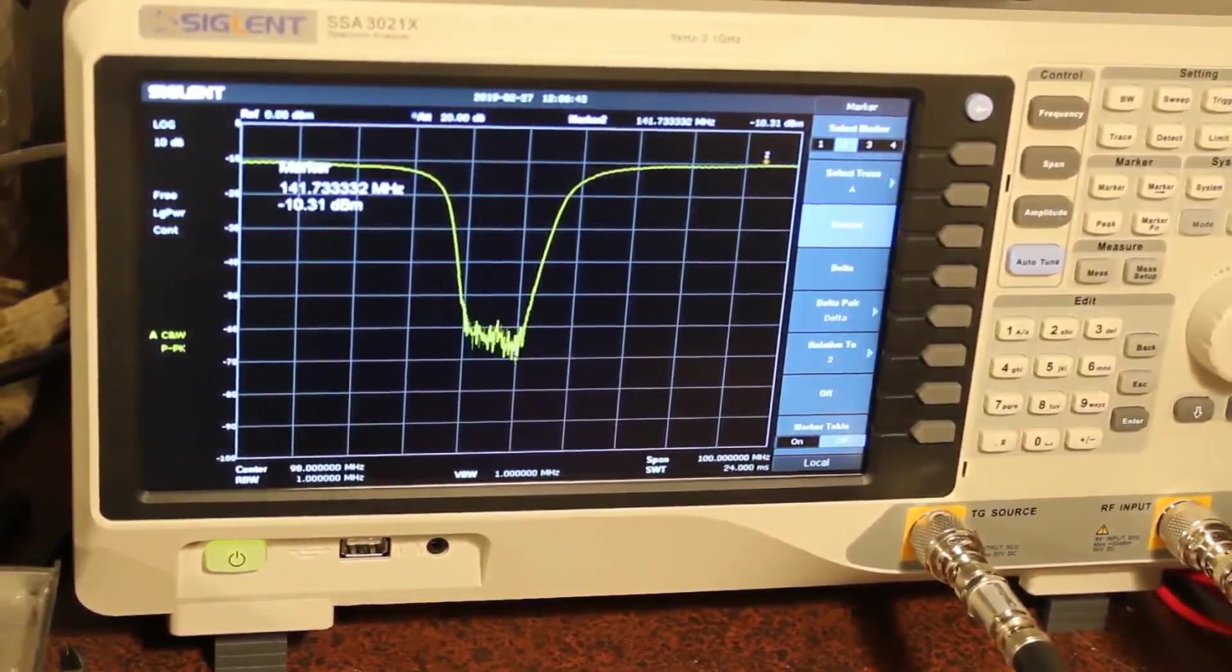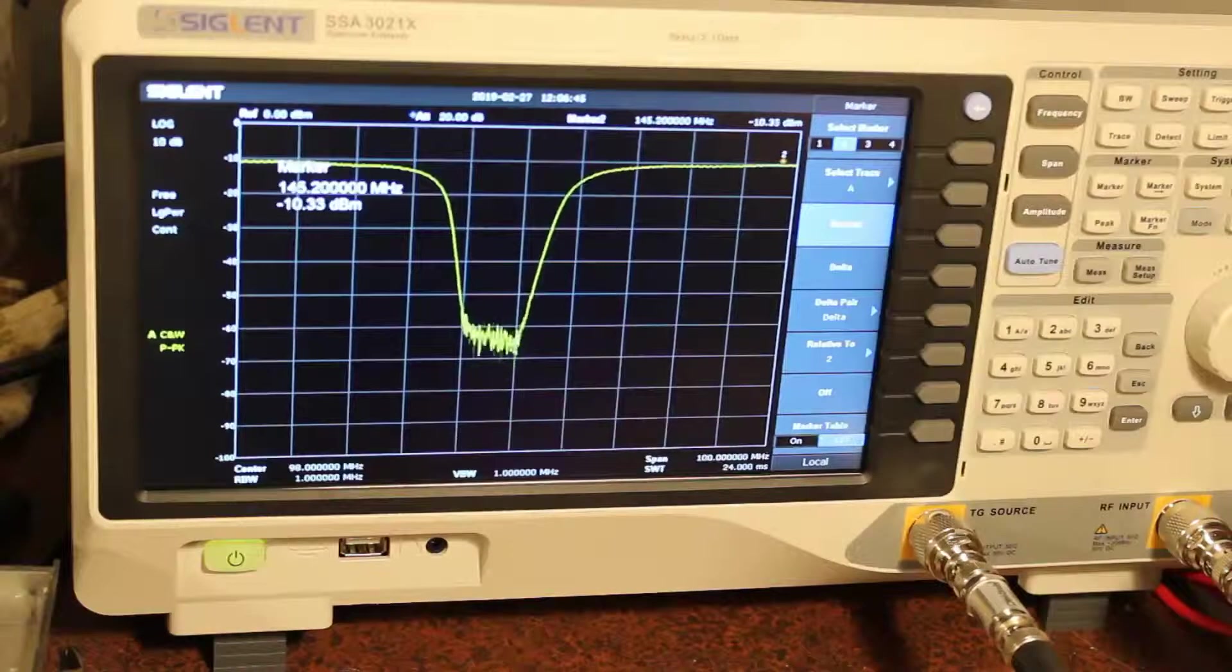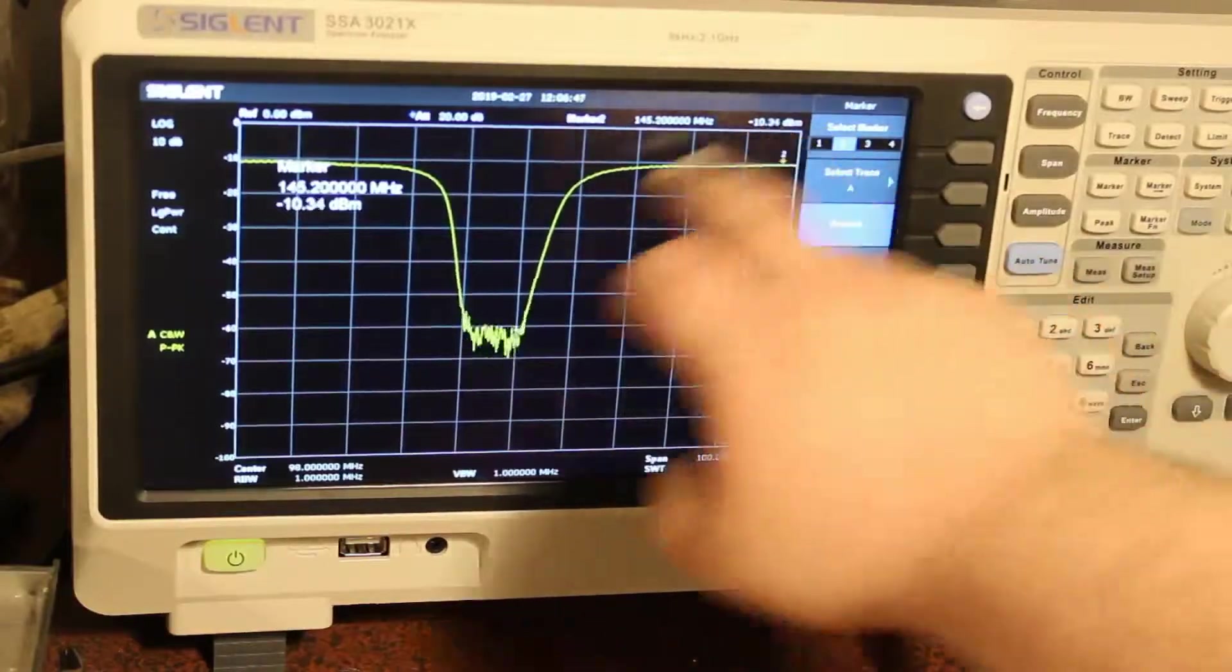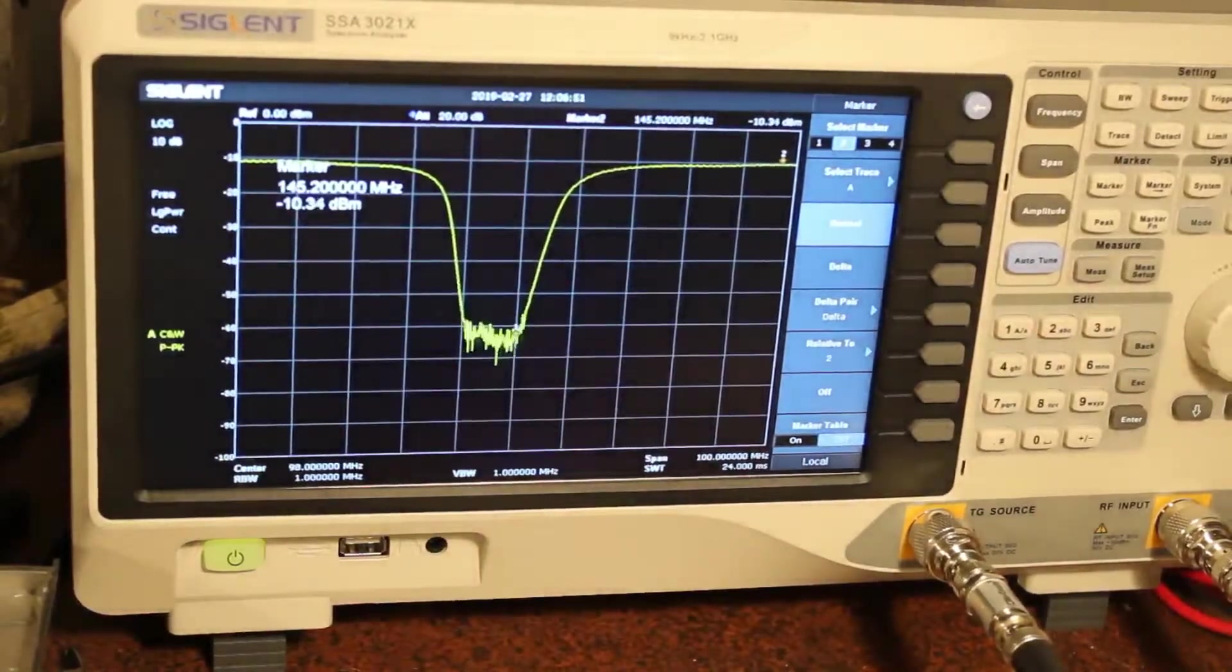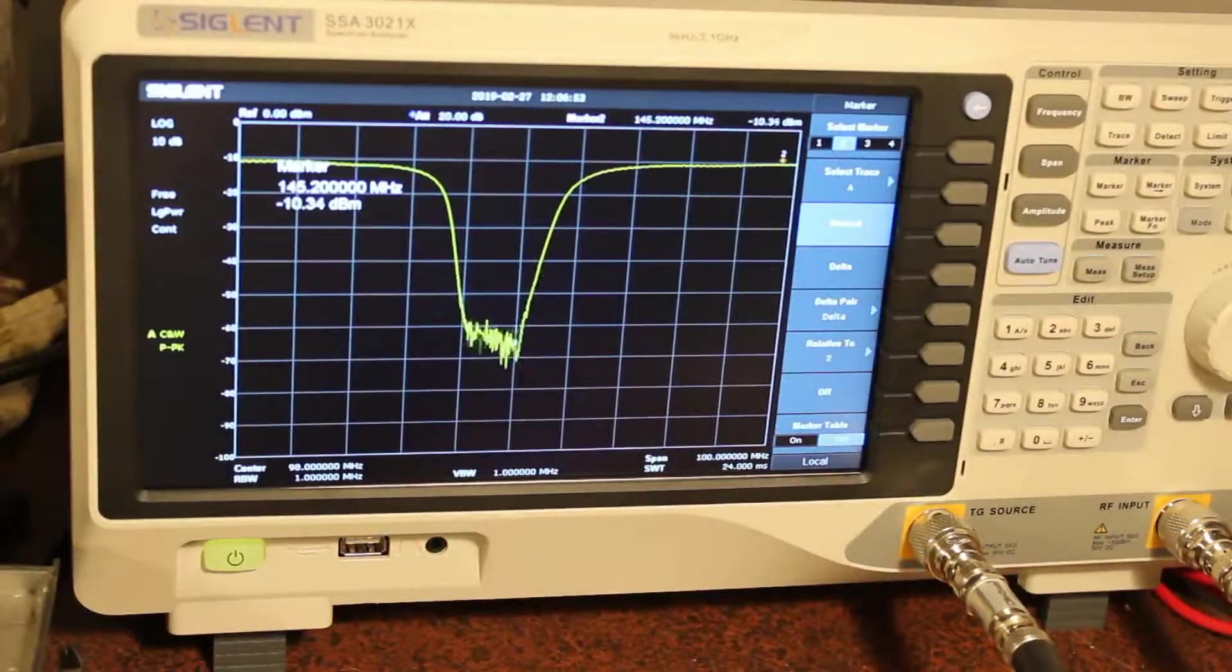So around here, I only have a very small amount of attenuation. So negative, well here, it looks better there, negative 0.34 dB. That's nothing. I'm going to lose more in my coax up there.